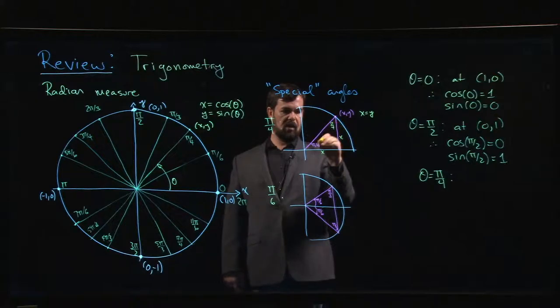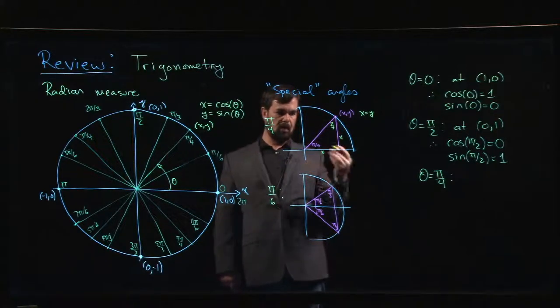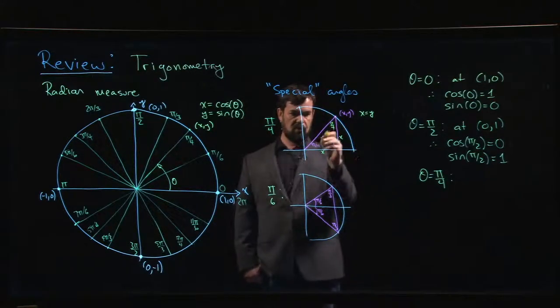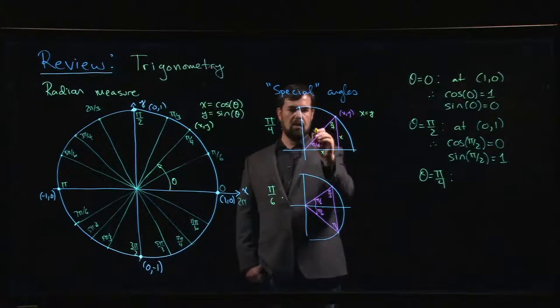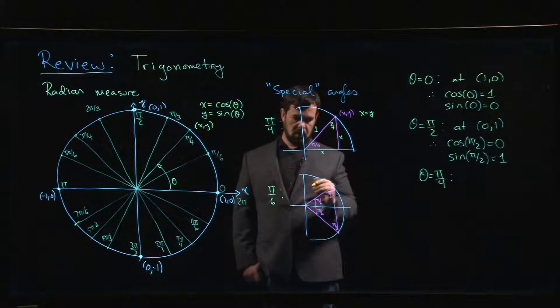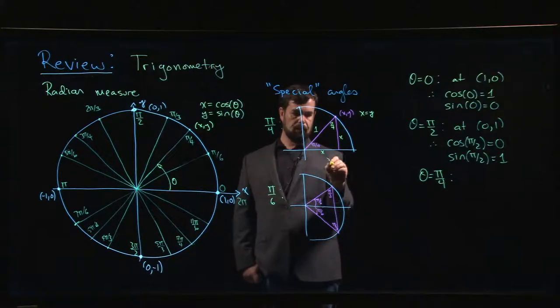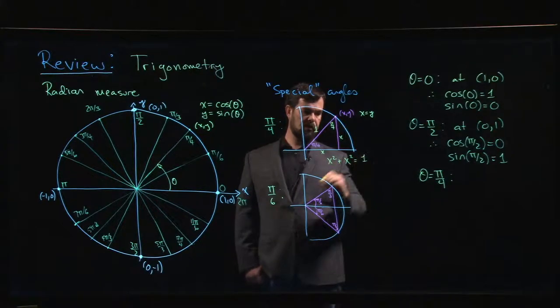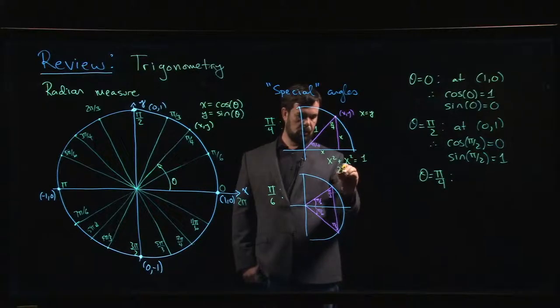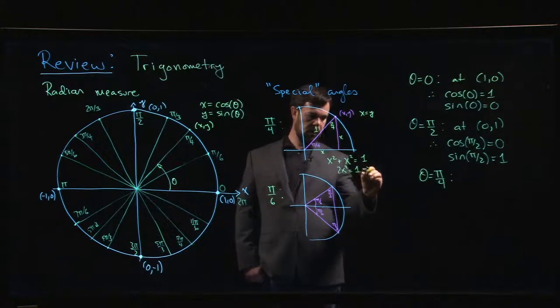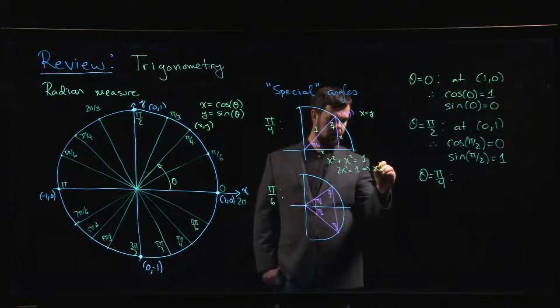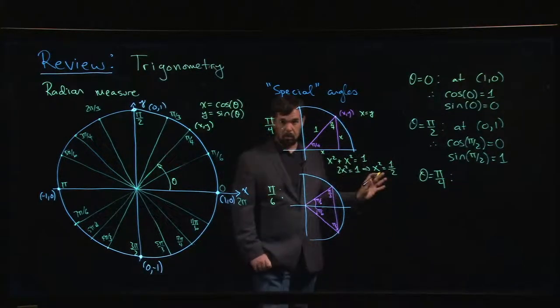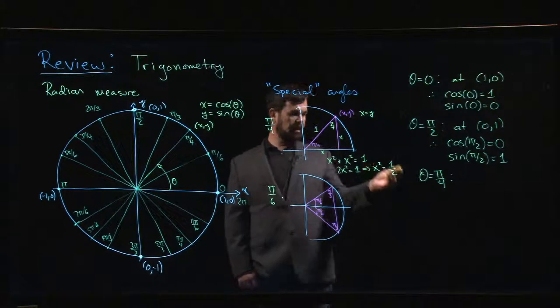And we can work it out. The other way you know it's isosceles is that those two angles have to be the same. And we know that for triangles, the angles also influence the ratios of the sides. So if those two angles are the same, the side lengths have to be the same. We know that the hypotenuse has length 1. And we know from Pythagoras that x squared plus x squared has to give me 1. So that means that 2x squared has to give me 1. That means that x squared is 1 half. I'm in the first quadrant, so x and y are both positive, so I can take the positive square root.